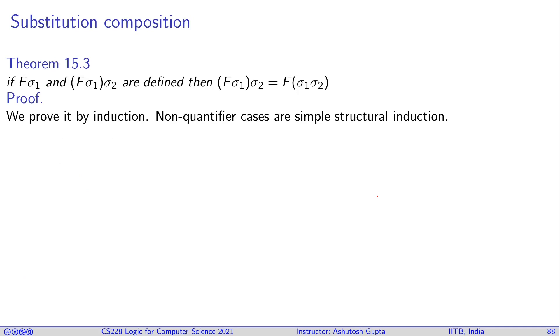So let's look at a theorem which is the suitability aware, so that we understand how this is going on. Let's suppose F sigma one is defined, I mean when you do substitution, everything comes out suitable. And similarly, F sigma one sigma two is defined. Then I can say that F sigma one sigma two is same as F (sigma one sigma two). That means the composition works. So let's see how we can prove that composition works for a formula.